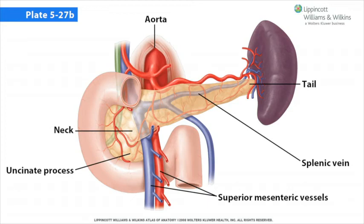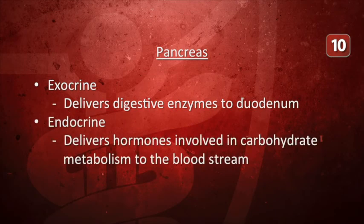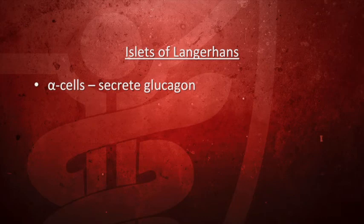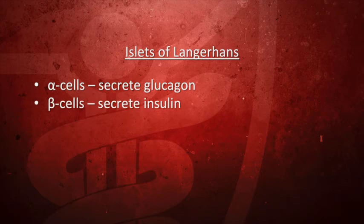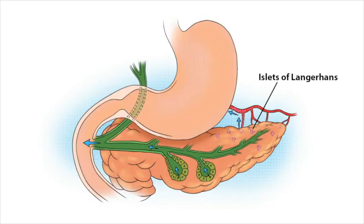The pancreas is a gland — in fact, two glands in one. It is an exocrine gland that delivers digestive enzymes to the duodenum via a duct, and it is an endocrine gland that delivers hormones involved in carbohydrate metabolism to the bloodstream. The endocrine cells, which account for only about 2% of the mass of the pancreas, form irregular clusters called islets of Langerhans. Three main cell types make up the islets: alpha cells which secrete glucagon, beta cells which secrete insulin, and delta cells which secrete somatostatin. The islets are abundantly vascularized with fenestrated capillaries to carry these hormones into the circulation.